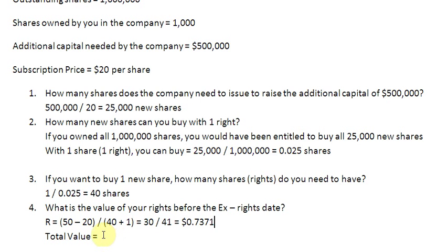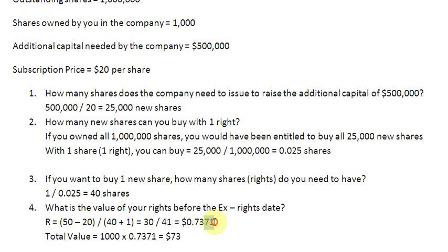I also want to find out the total value of my rights. Since I own 1,000 shares, the total value of my rights before the ex-rights date is 1,000 multiplied by $0.7317, which gives $731.70. Note: there was a digit transposition earlier — the correct per-right value is $0.7317, not $0.7371. So the total value of my rights before the ex-rights date is $731.70.